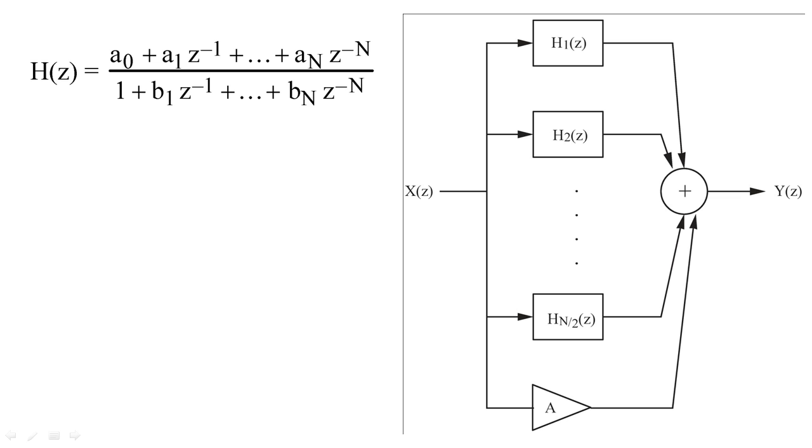If we arrange our second-order filters in a parallel configuration, we will again need N over 2 sub-filters to implement our larger filter. When we place filters in parallel, we must add the frequency responses of all the filters together.